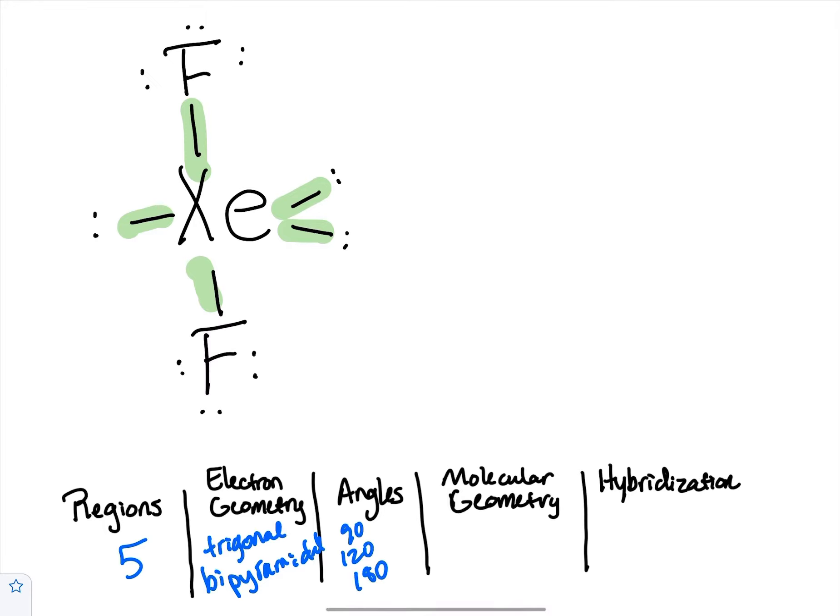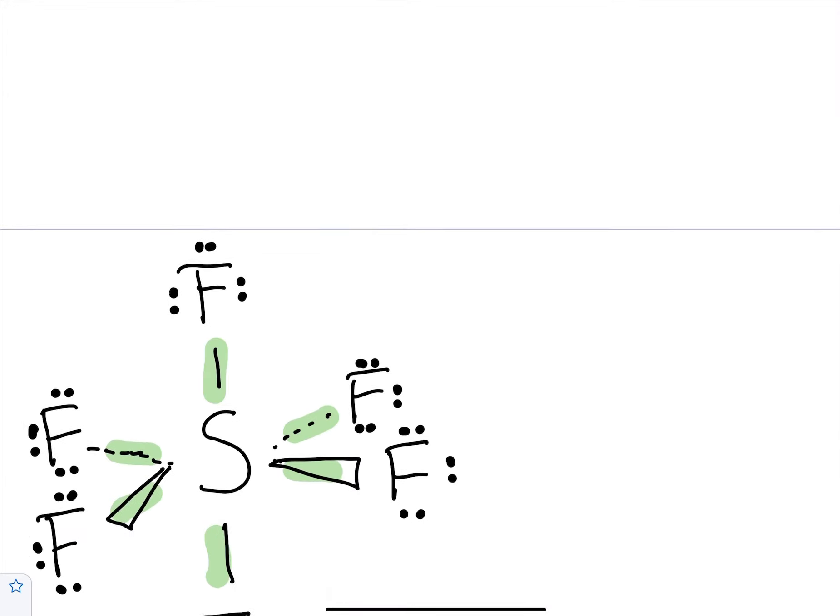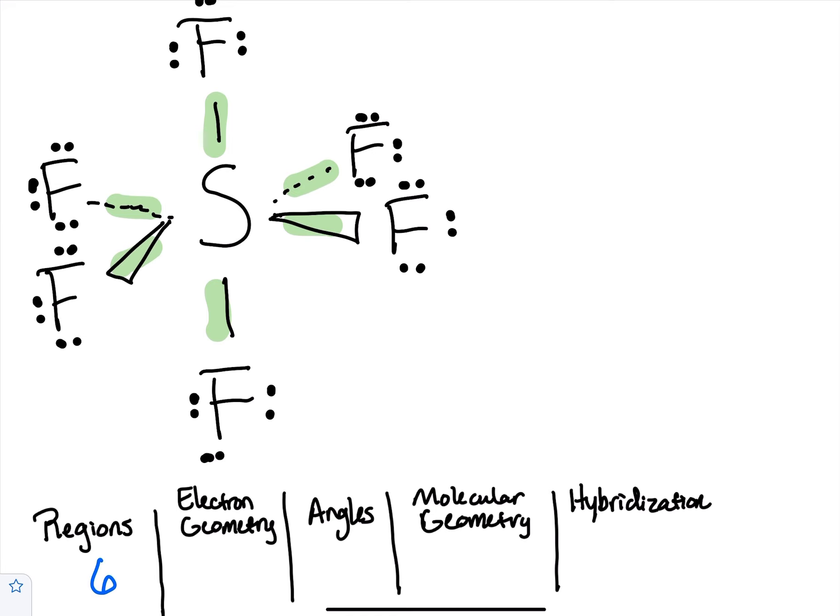Now we're in our next shape here and this one is where you've got a square and you've got the up and down. This is one where people want to say square bipyramidal and I know that seems like that would make sense, but instead we are counting the faces of that square.